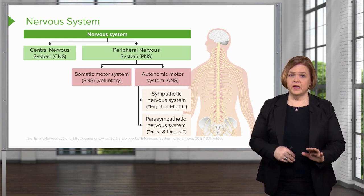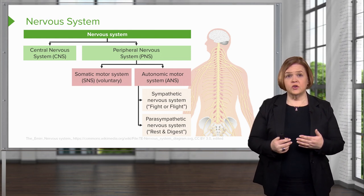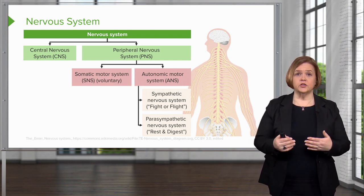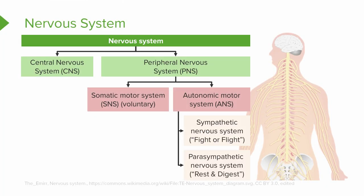I don't want to go past this slide too quickly because you need to make sure you have all these pieces clear in your mind. Pause the video right here and see if you can sketch out how all these pieces fit together in your own handwriting. Start with the nervous system, break it down into CNS and PNS, then you've got the SNS and the ANS, sympathetic and parasympathetic. Try it two or three times — it's critically important that you understand how all these parts fit together.